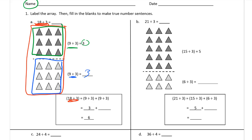So 9 divided by 3 equals 3, and that other 9 divided by 3 also equals 3. If you add the green section to the blue section you get the whole thing inside the red box. Three plus three is six, so 18 divided by 3 equals 6. There's the fact family: six times three equals 18.